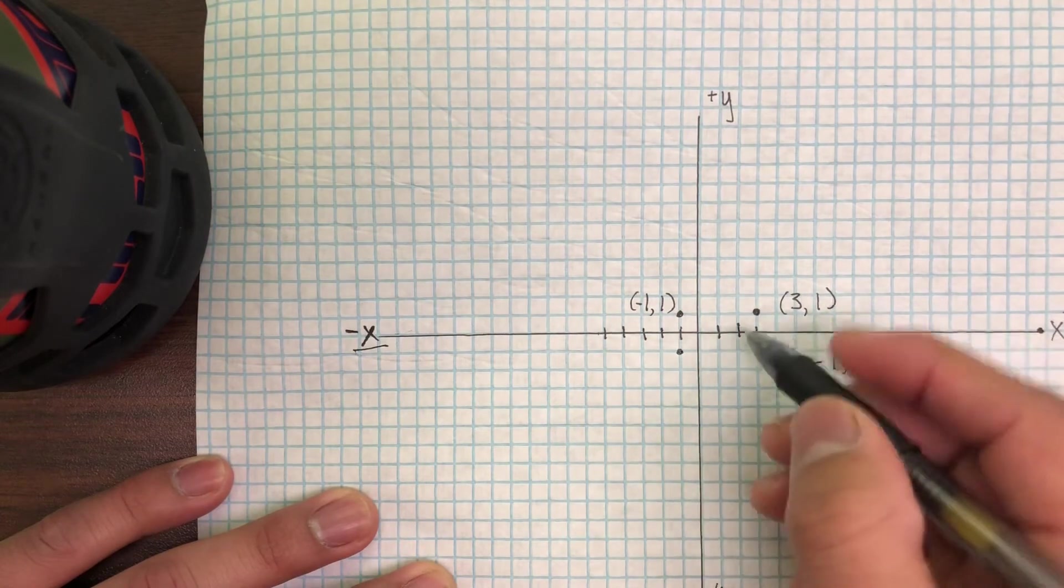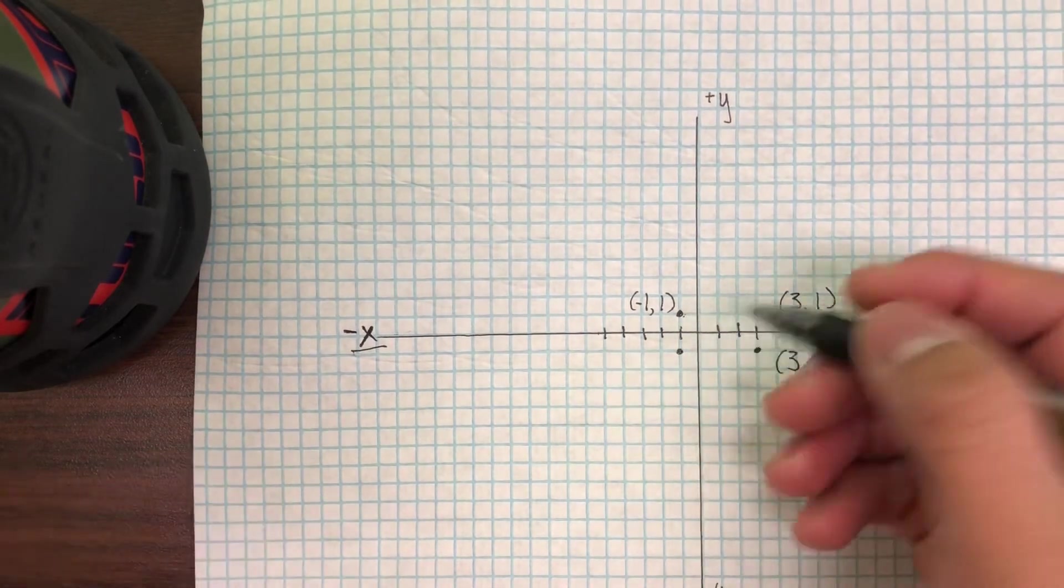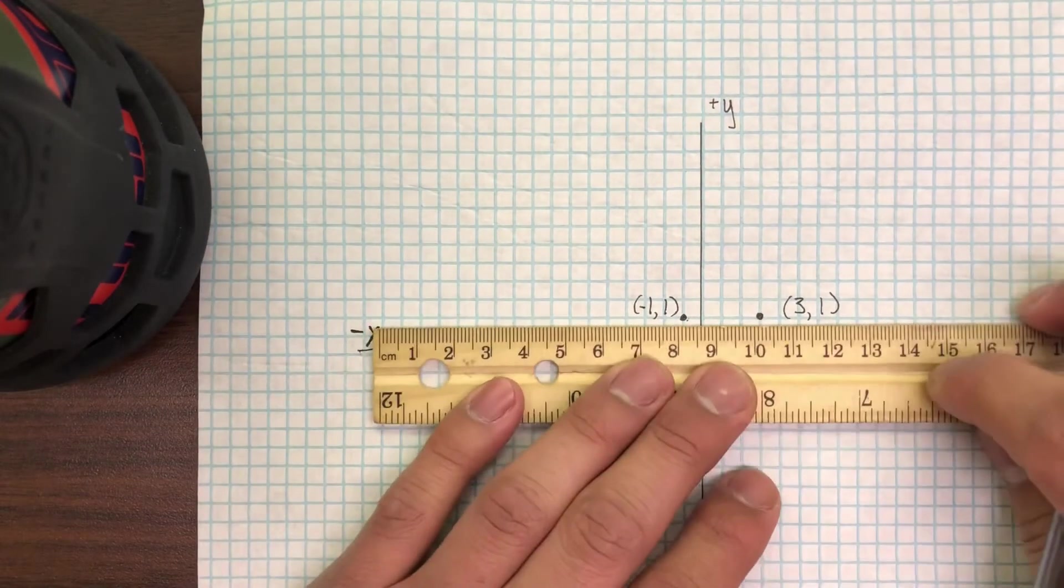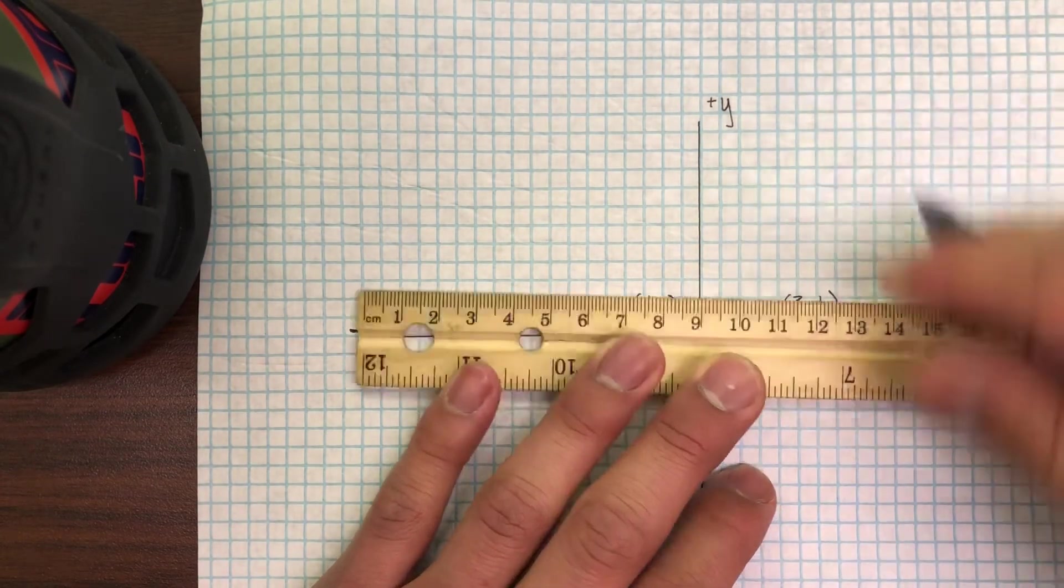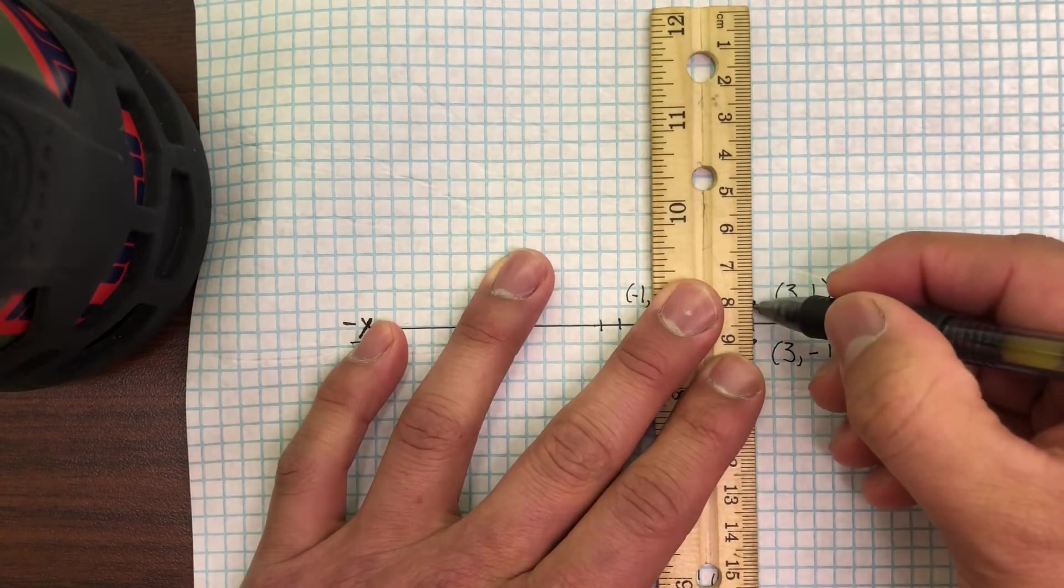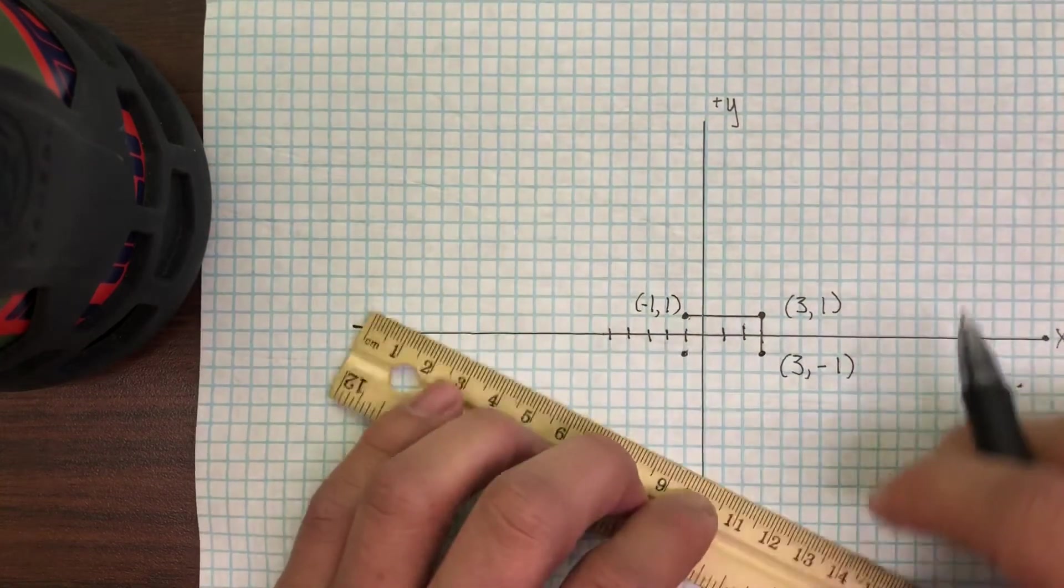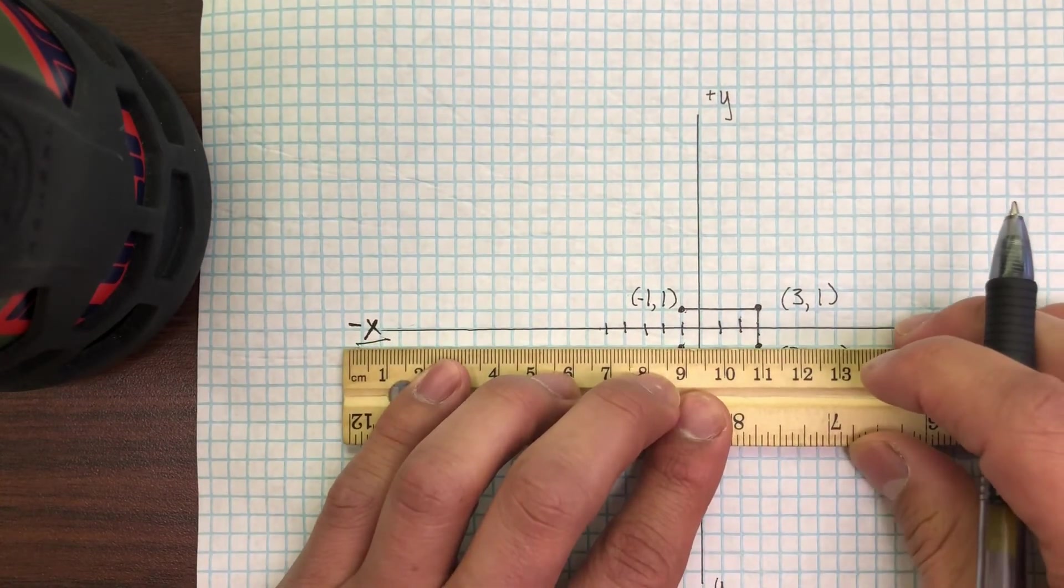So now we're gonna connect them, and you could use a ruler or you could just draw a really straight line. But I want to keep it neat, so I'm gonna draw a segment connecting each point.